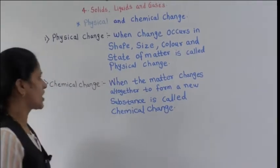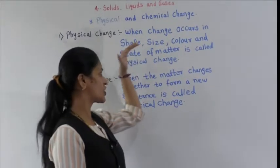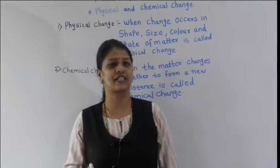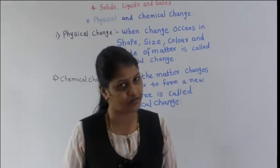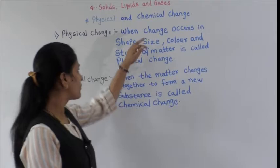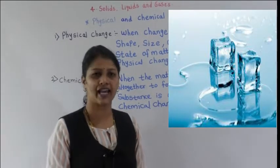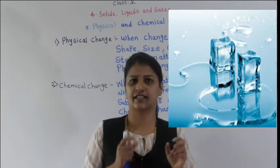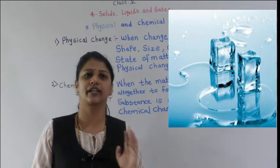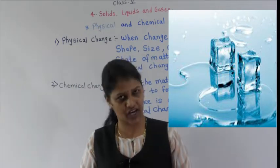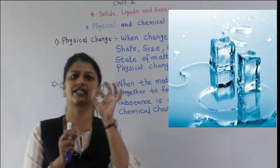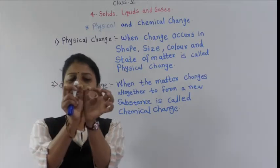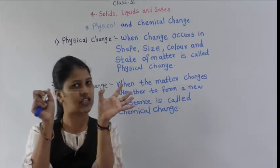Physical change is when a change occurs in the shape, size, color, and states of matter — it is called a physical change. For example, ice is in solid form. When it converts into water, it changes its shape. Similarly, when I stretch the rubber band, it changes its shape — but can we convert water back to ice? Yes, by freezing.